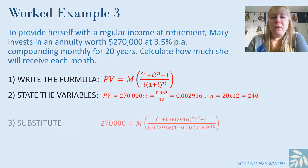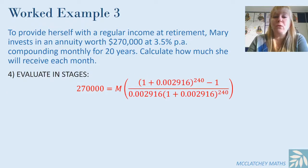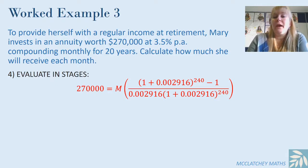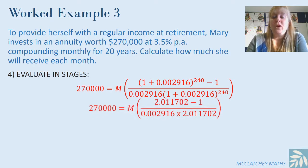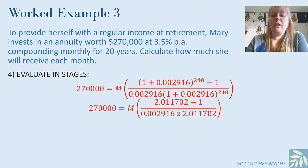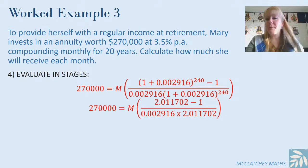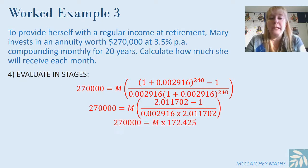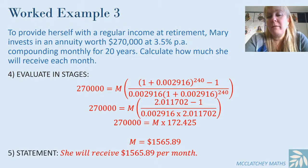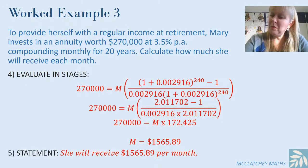Whichever formula you choose you do have to memorize something, so choose the one easiest for you to remember. We're going to go with the Jacaranda formula today, substitute all variables into the formula, remembering not to round too quickly on your calculator. We take the interest rate to the power of 240 and find that's 2.011702 — make sure you've stored as many decimal places as possible to avoid early rounding. We then find that M is equal to $1,565.89, and that's how much Mary is going to receive every month in retirement.